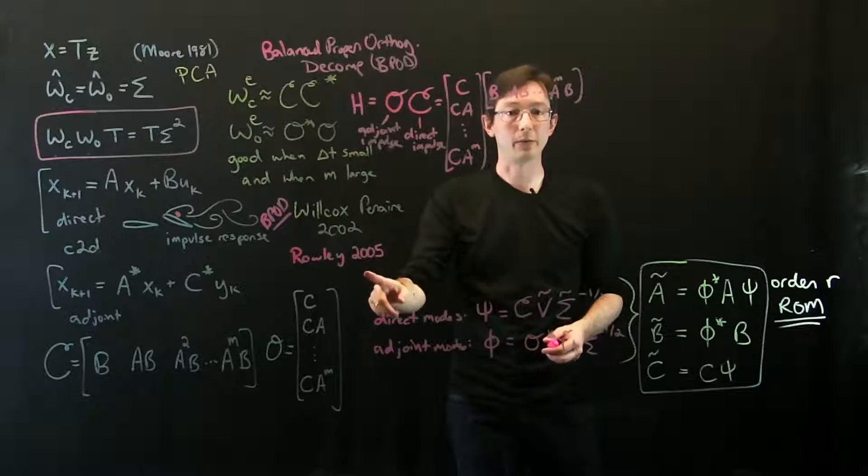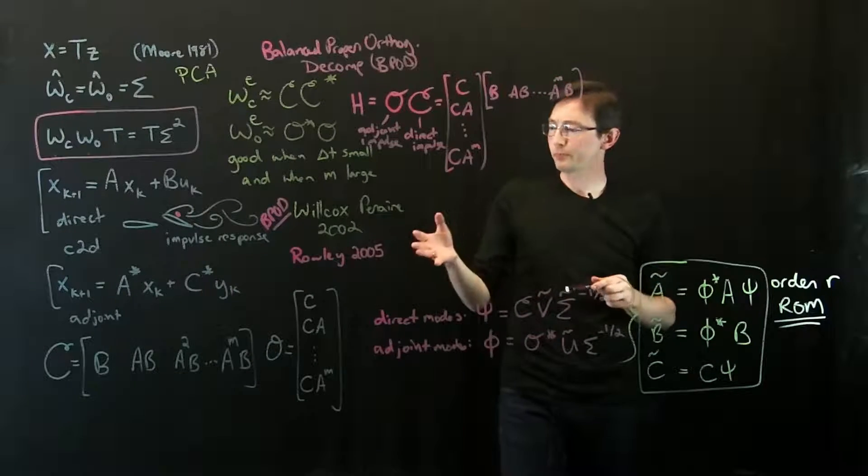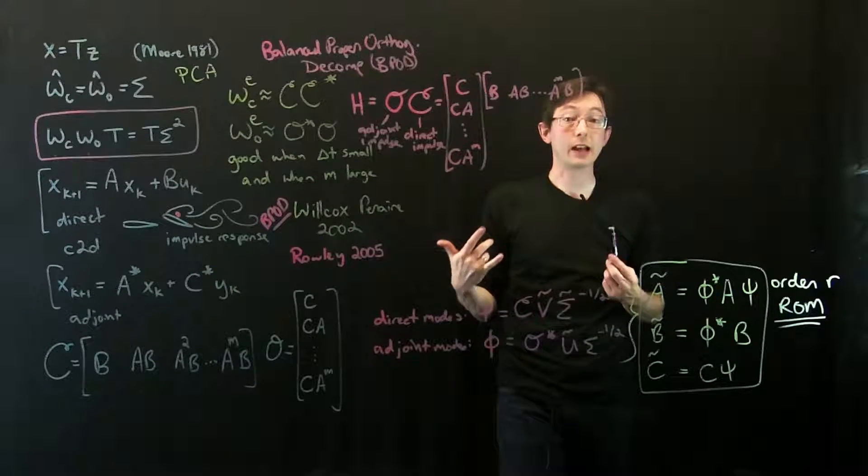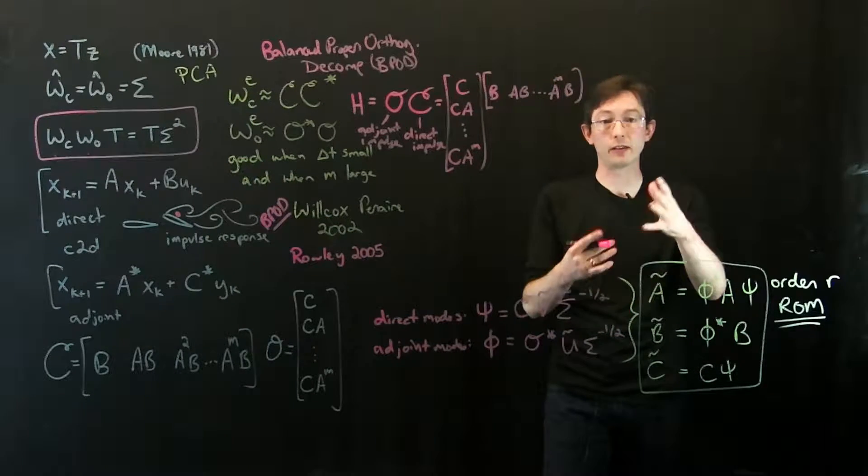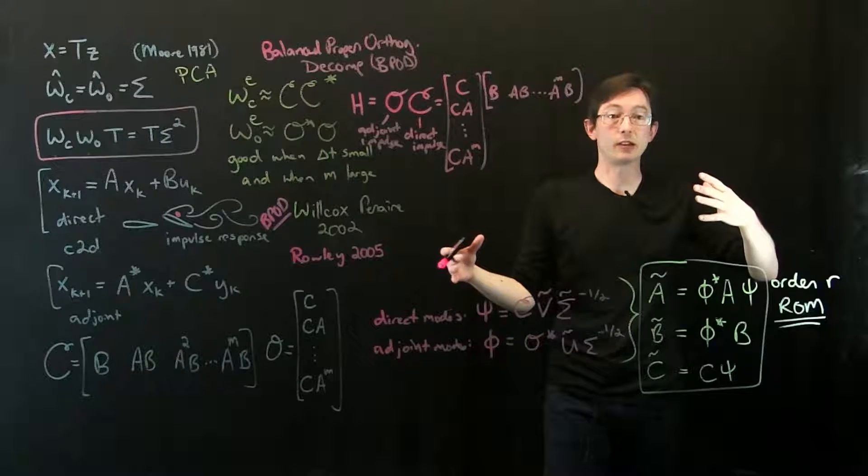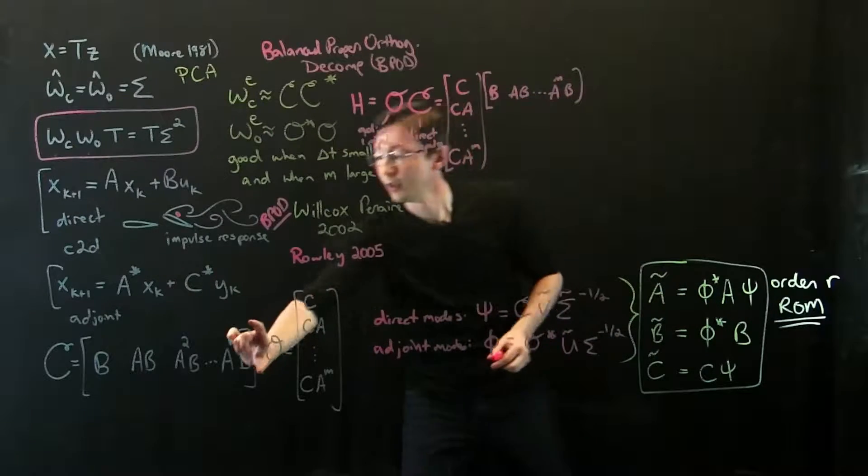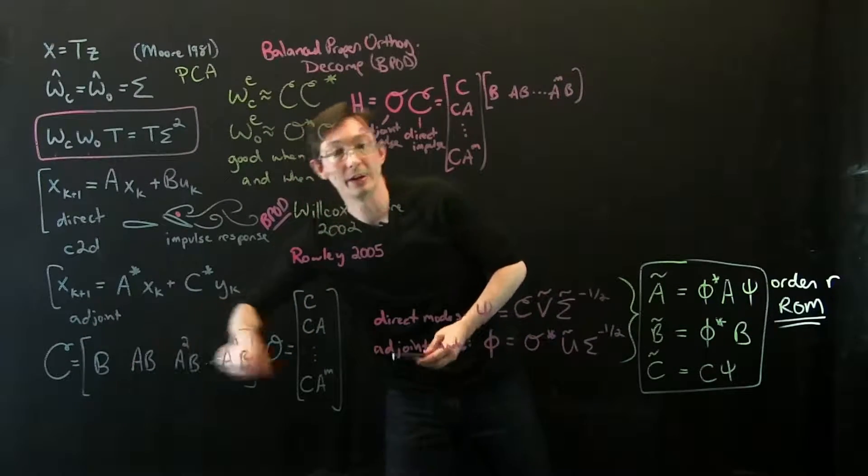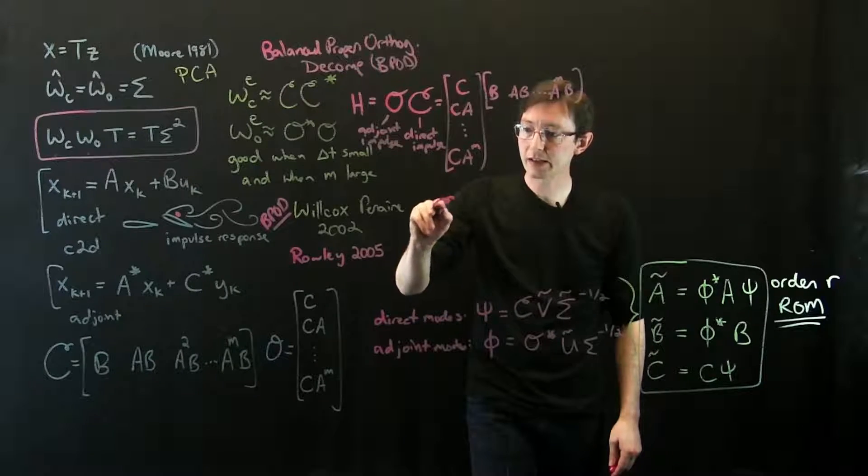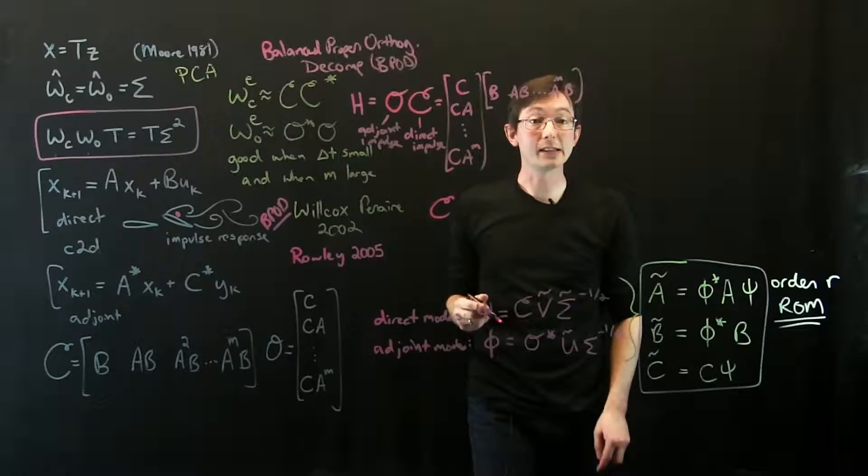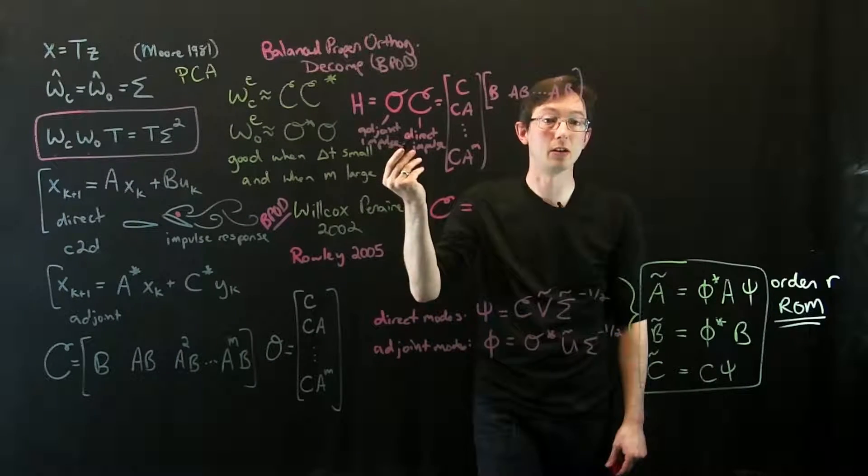This was an innovation that Rowley made in 2005, essentially realizing most dynamical systems, even very high dimensional ones like million dimensional systems, if you kick them and measure the output response, there's some dominant patterns, some coherent structures that emerge from that data in this controllability matrix C. So essentially what I can do is take this controllability matrix C and take its singular value decomposition.